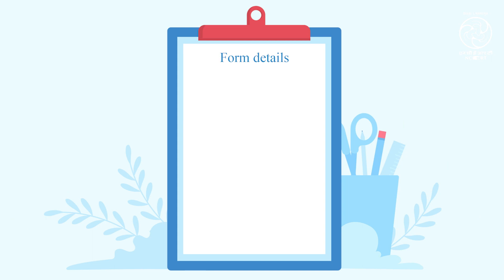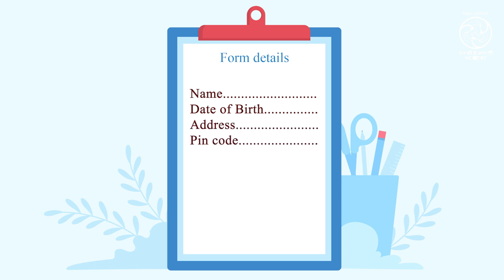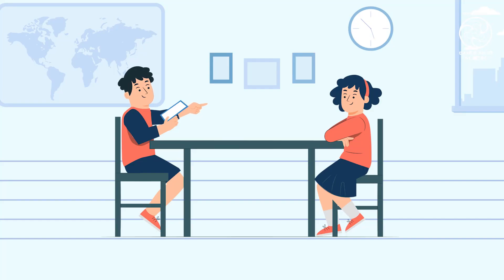The form may include, but not limited to, the following: name, date of birth, address, pin code, hobbies, and finally, the signature. When the student has finished filling the form, the other partner would read the form carefully and add to their details and also certify whether the details are correct.